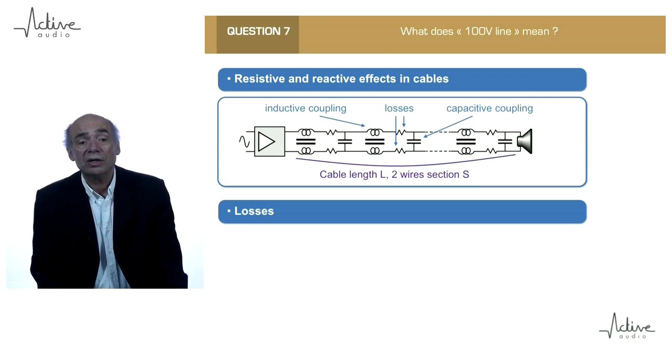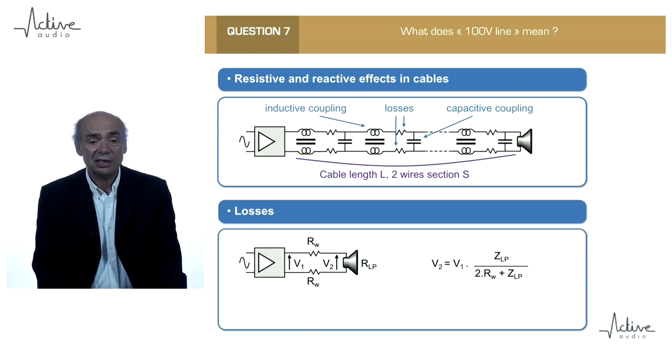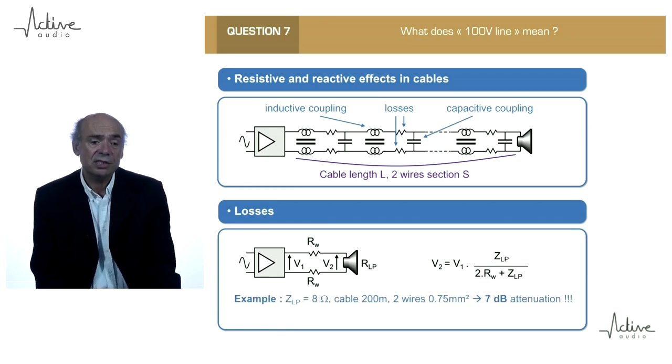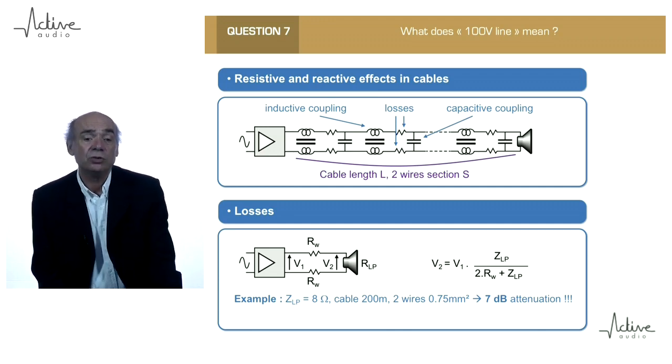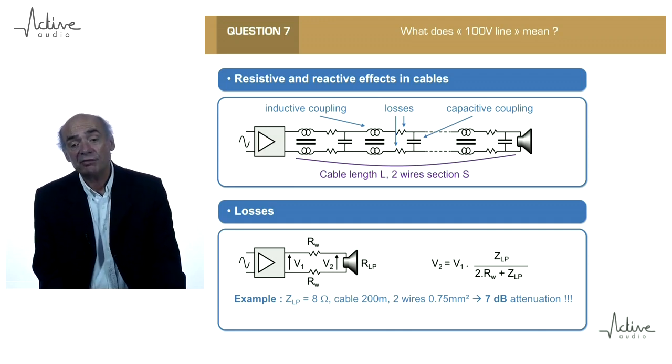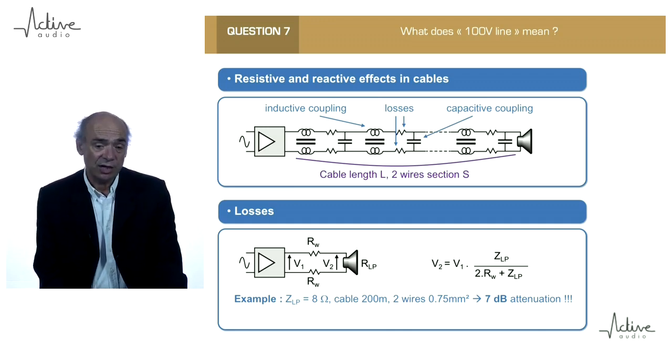So, losses. The resistors have a very simple effect, which is a voltage divider. For example, if we consider an 8-ohm loudspeaker with 200 meters of cables, with two wires of 0.75 mm², then we have 7 dB of attenuation in the cable, which is enormous.